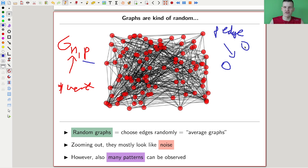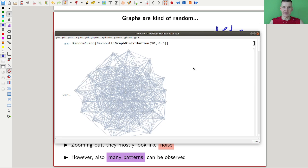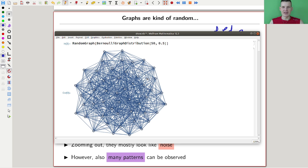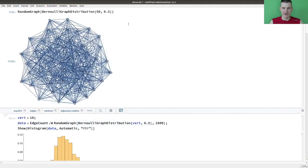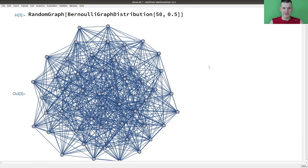Let me just pull up here my little illustration. Bernoulli graph distribution, 50 is my N - 50 vertices, that's what you should be able to see here. Probability is 0.5 to put an edge. And if I just do that, that's what I mean. It looks like noise. I can zoom in a little bit, but I don't want to spoil the story of what's coming up. Here it looks really like noise.